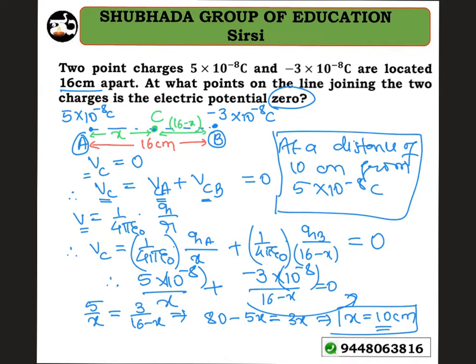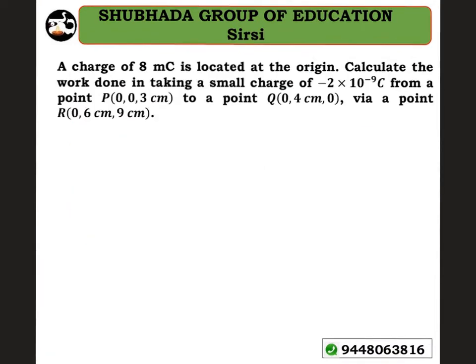Now let's move to the next problem. A charge of 8 millicoulomb is located at the origin. Calculate the work done in taking a small charge of minus 2 into 10 to the power of minus 9 coulomb from a point P (0, 0, 3 cm) to a point Q (0, 4 cm, 0) via a point R.